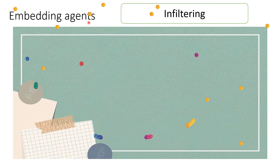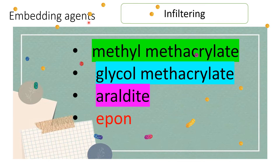Next are the embedding agents. The embedding agents are methyl acrylate, glycol methacrylate, araldite, and epon. Epon is very useful for electron microscopy. The embedding process gives the tissue strength on the outer side.